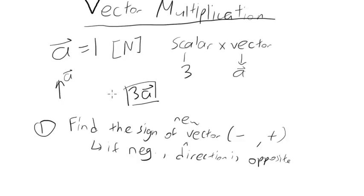So basically if it was negative 3A, the direction of the vector would be in the opposite direction, and if it's positive, then same direction. Simple as that, step two.